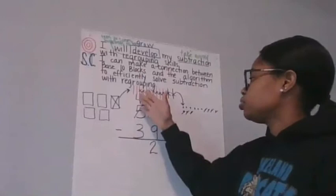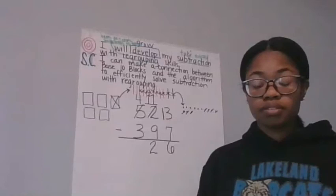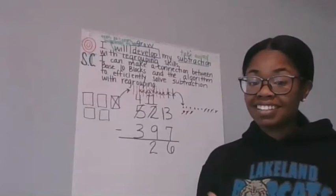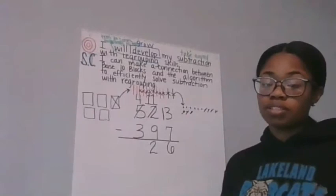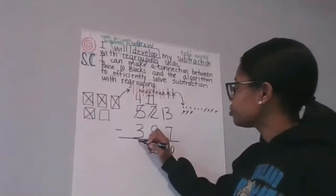All right. Our last step is to subtract the hundreds. So what is four hundreds minus three hundreds? Can I do that without regrouping? Or do I need to regroup? You got it. I do not need to regroup. I have four hundreds. I can totally take away three. So let's do it. One, two, three. How many hundreds are left? One.